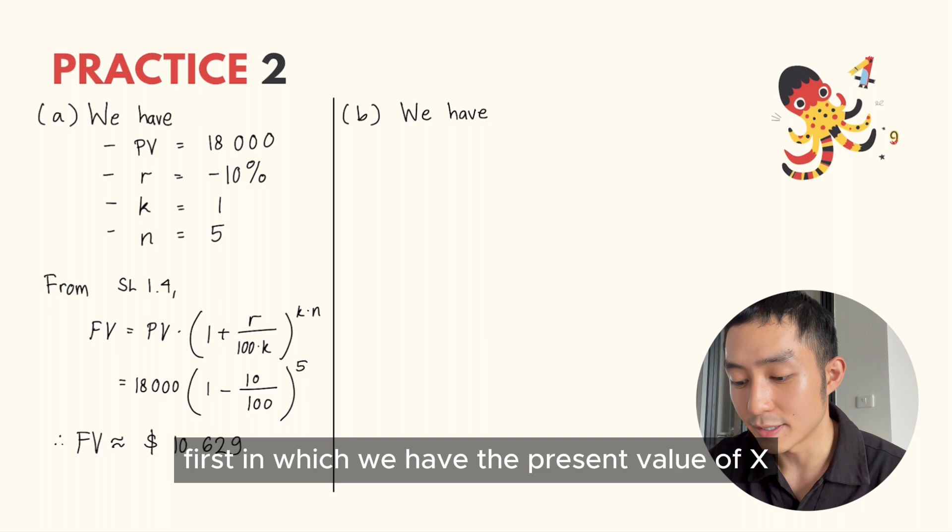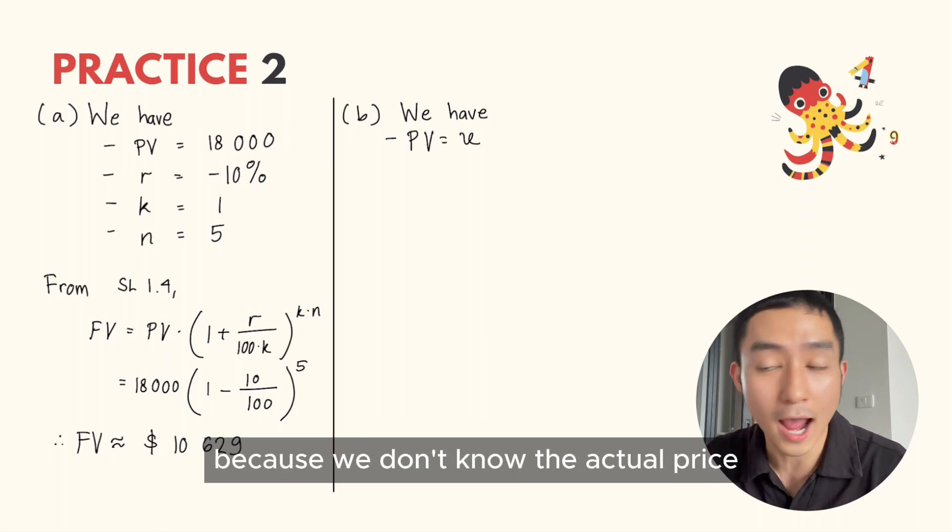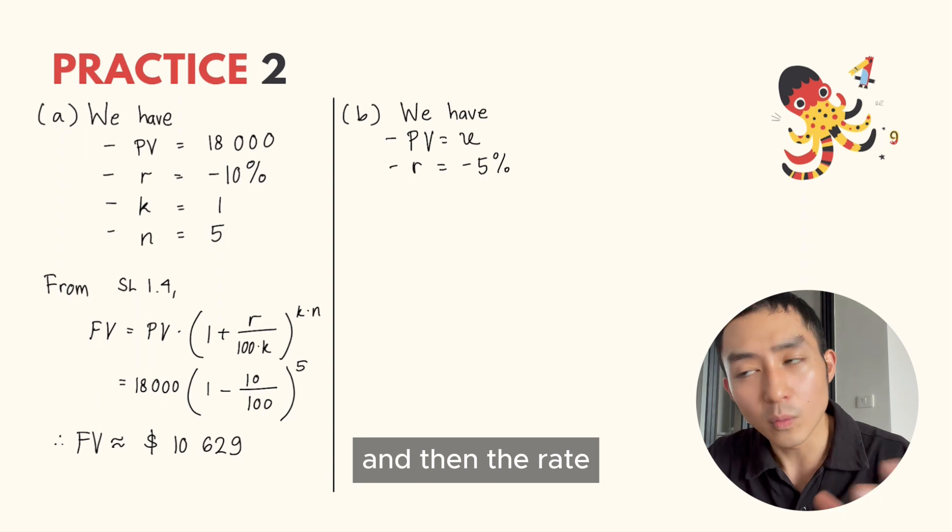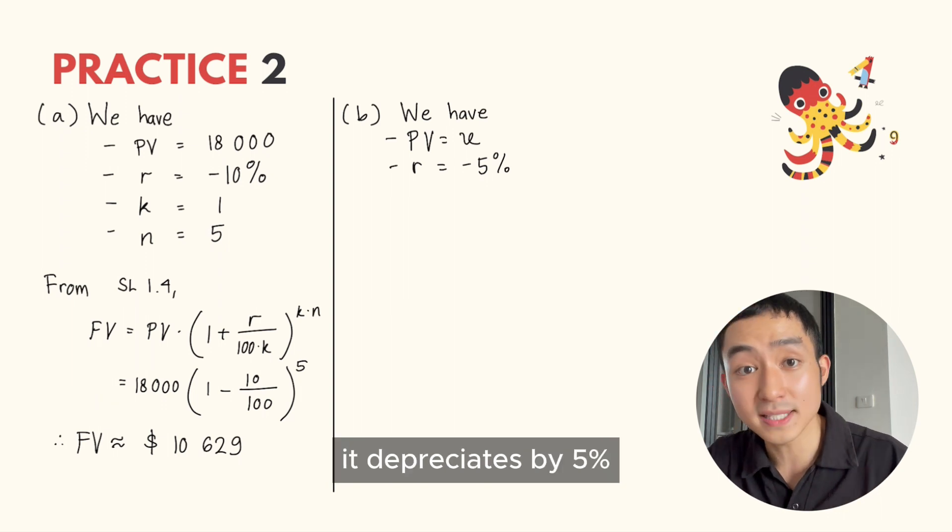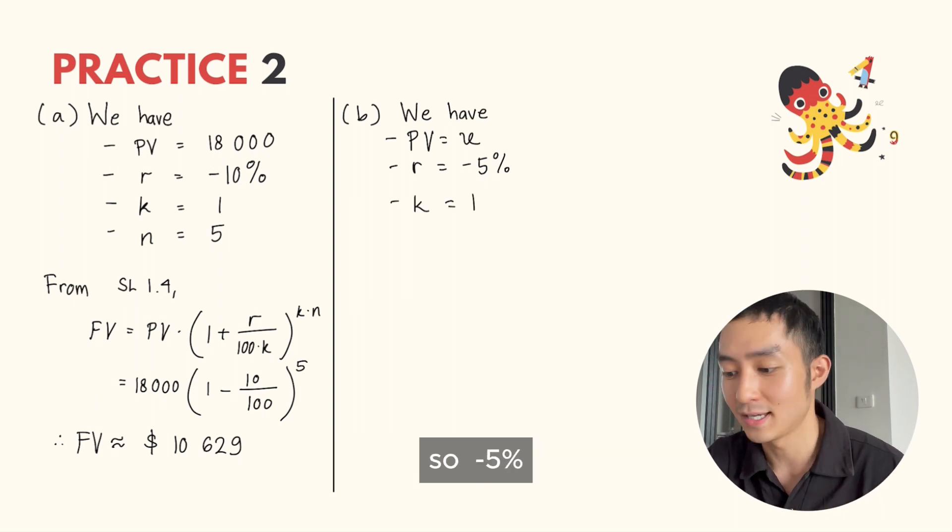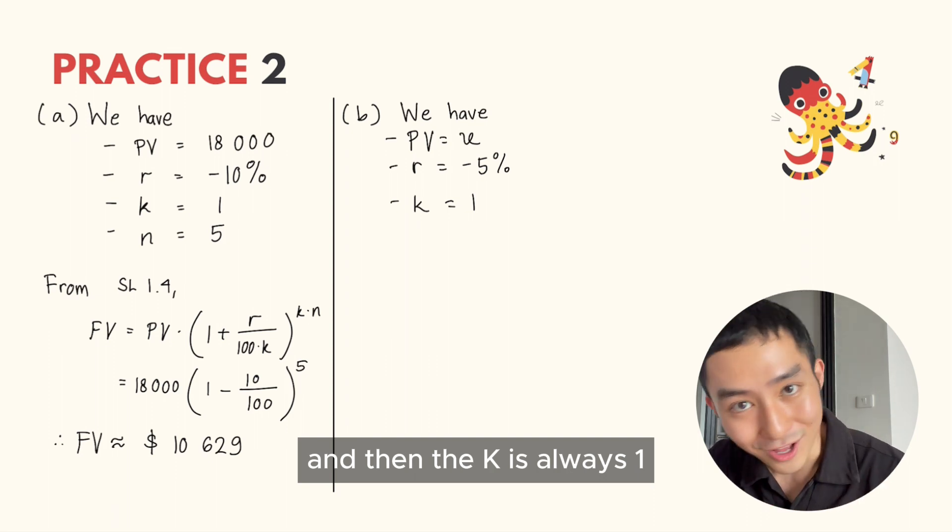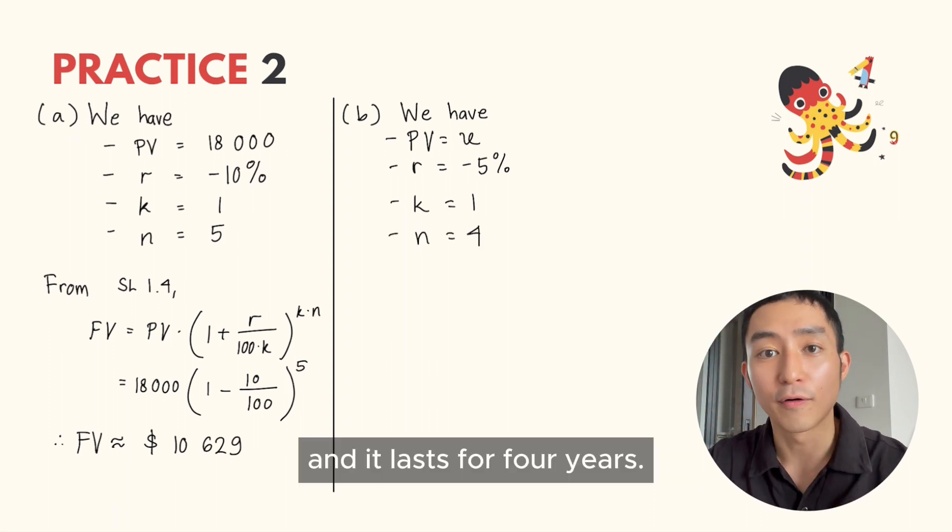First, write what we have, in which we have the present value of x because we don't know the actual price. The rate depreciates by 5%, so minus 5%. Then K is always 1, and it lasts for four years.